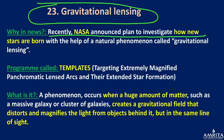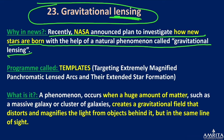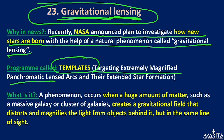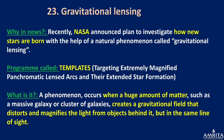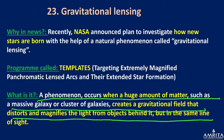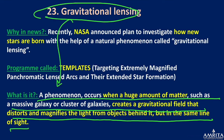Gravitational Lensing: NASA announced a plan called TEMPLATES — Targeting Extremely Magnified Panchromatic Lensed Arcs and Their Extended Star Formation — to investigate how new stars are born using the natural phenomenon of gravitational lensing. Gravitational lensing occurs when a huge amount of matter, such as a massive galaxy or cluster of galaxies, creates a gravitational field that distorts and magnifies light from objects behind it but in the same line of sight.